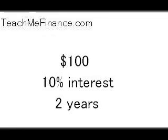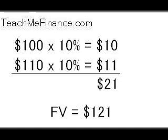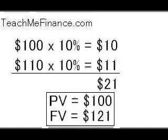For example, if I give you $100 and you take it to the bank, and they give you 10% interest per year for two years, the present value is easy — it's just $100, how much you've got right now. The future value is $121. First year you take 10% of $100, which gets $110. Then the second year you take 10% of $110, which is $11, bringing you to $121 total. So the present value is $100 and the future value is $121.